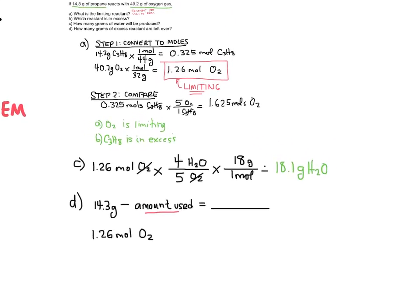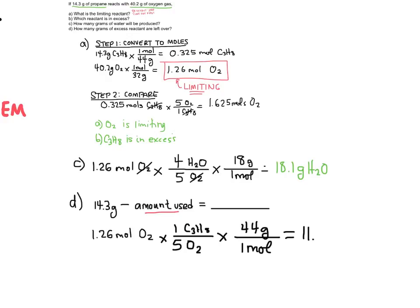I'll multiply 1.26 moles of O2 by the ratio of 1 propane to 5 oxygens, then convert to grams using the molar mass of propane — 44 grams per mole. Taking 1.26, dividing by 5, and multiplying by 44, I get 11.1 grams of propane used. So: 14.3 grams minus 11.1 grams equals 3.2 grams of propane left over. That's my answer to part D.